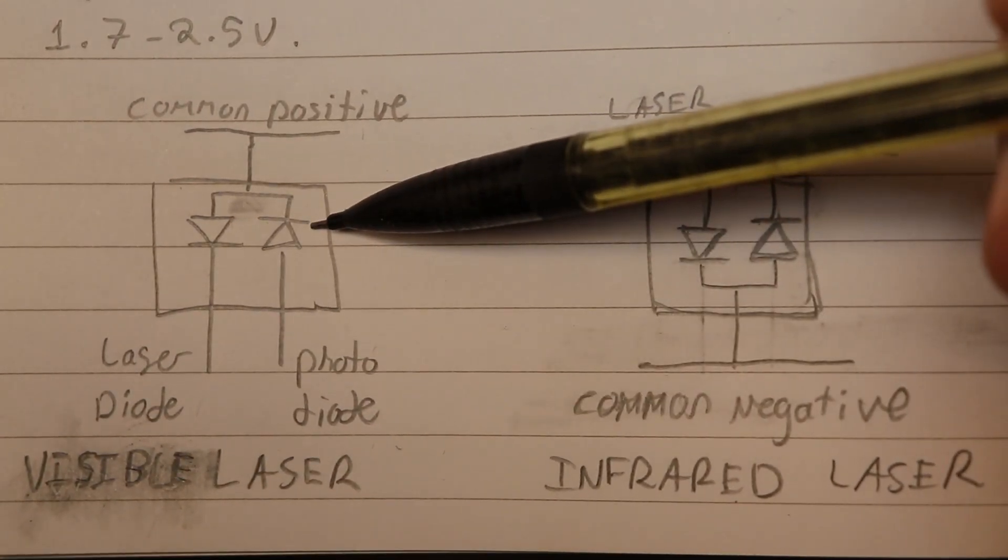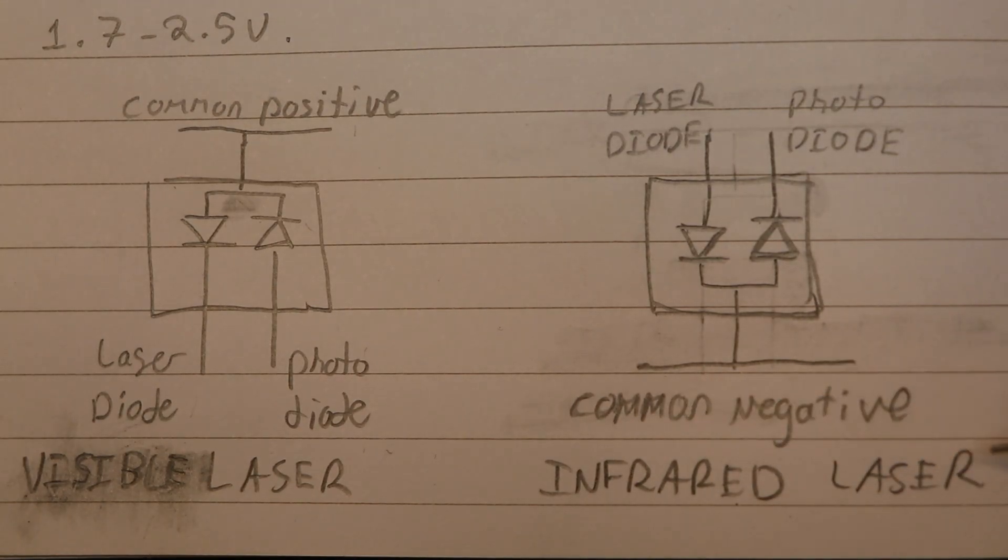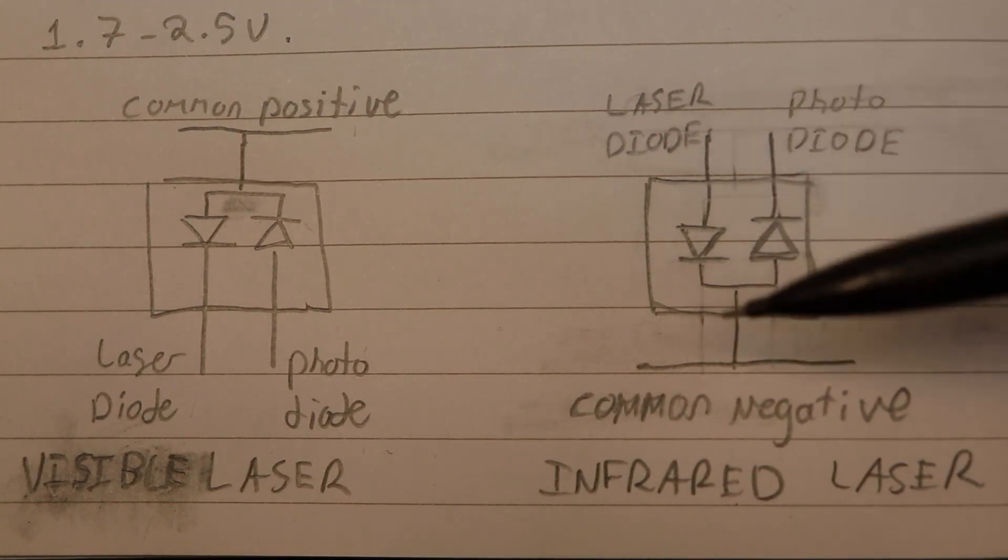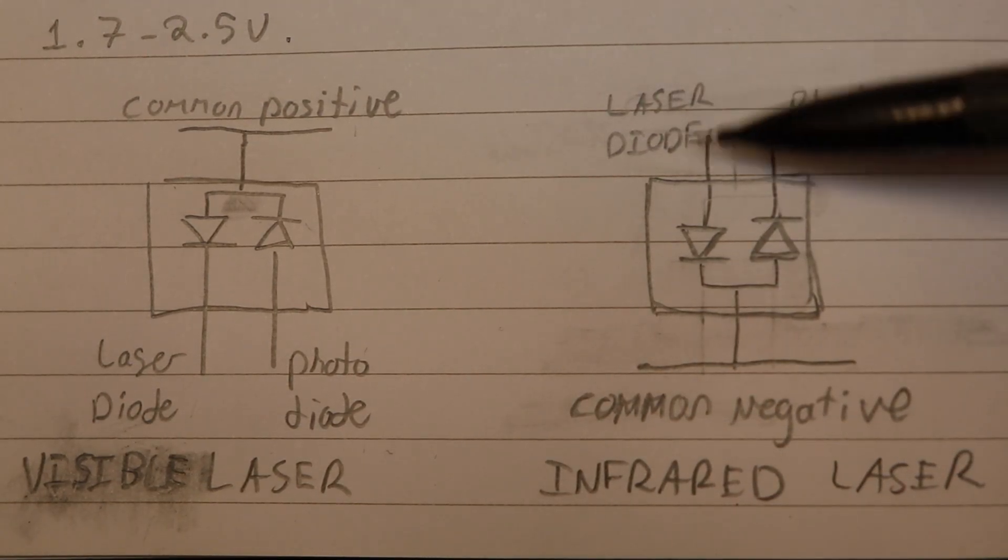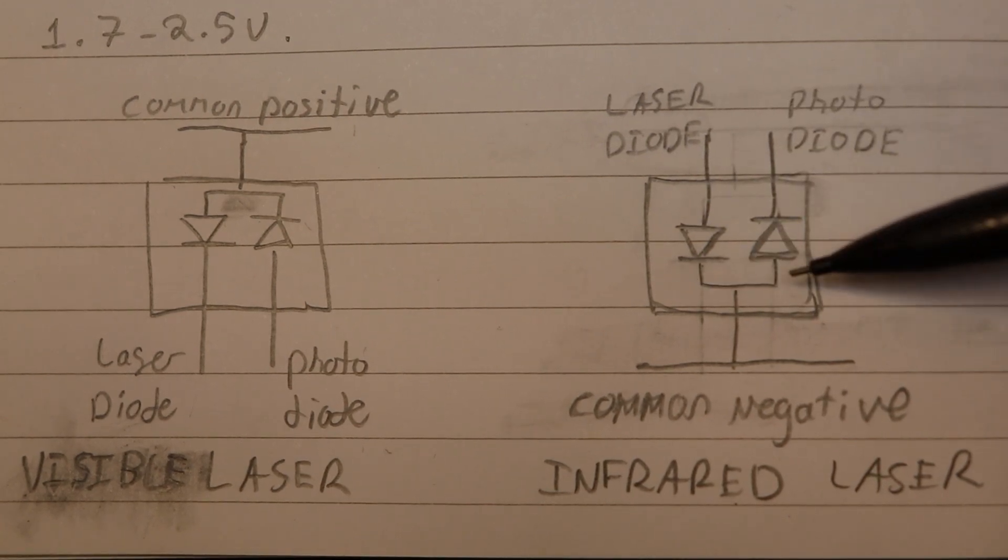With the visible laser you have it set up this way with a common positive, the laser diode on one side and a photo diode on the other side. And then with the infrared laser, so the invisible laser, you have a common negative and then you have a laser diode on one side and photo diode on the other.